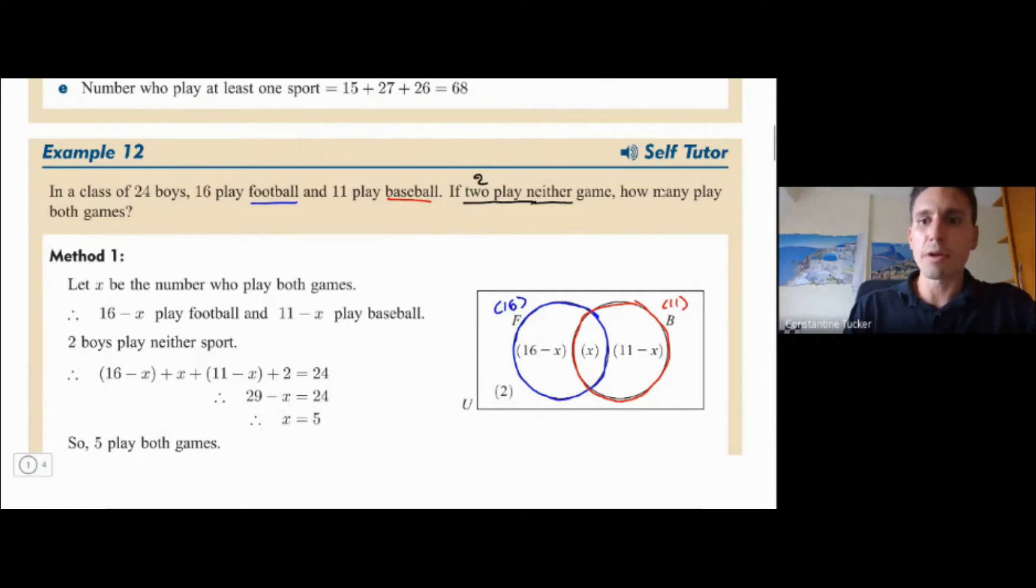Now they say how many play both games. So we need to find that number in the middle. So how does this whole business work? Let me explain. So firstly, they've given us that the total number of boys is 24. So they said the total is 24.